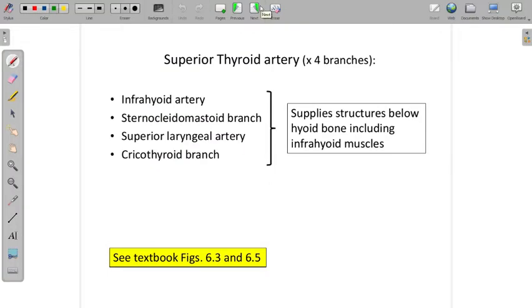Let's start with the superior thyroid artery. In addition to supplying the thyroid gland itself, there are four major branches I'd like you to know. There's an infrahyoid artery, a sternocleidomastoid branch, that's pretty much a giveaway where that's going, and superior laryngeal.